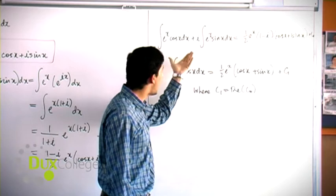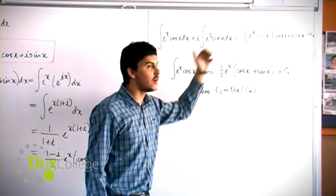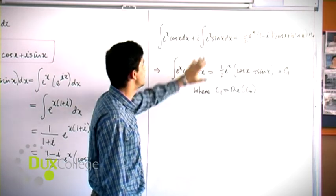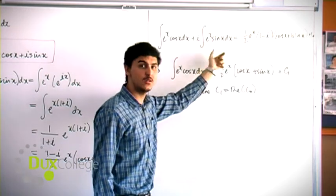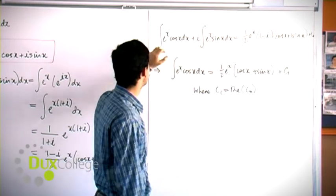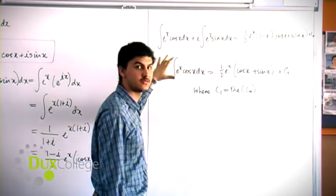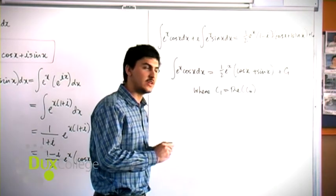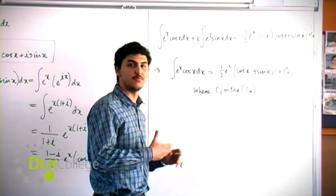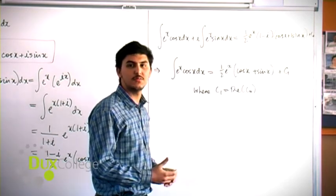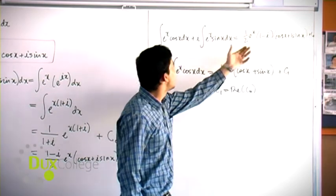Equating real parts on both sides gives us, on the left, the integral of e^x cos x dx. Since this integral is real, the real part of this integral is ∫e^x cos x dx. I haven't shown that we can integrate complex numbers without proof, but we can assume we can.